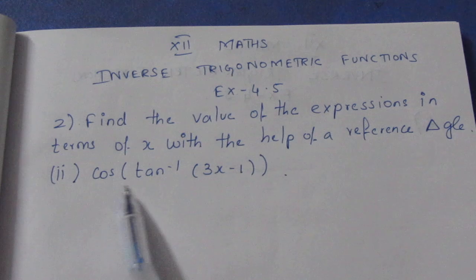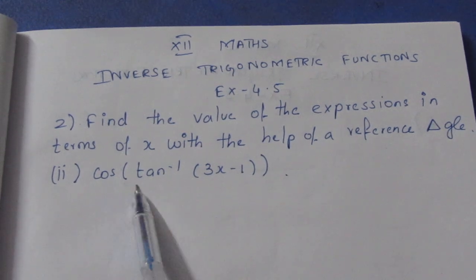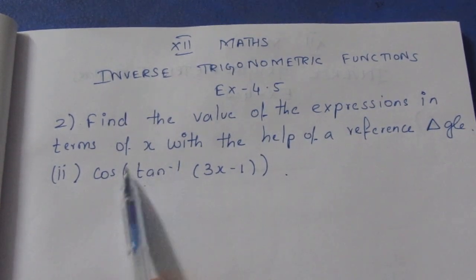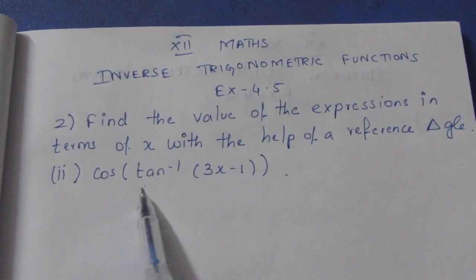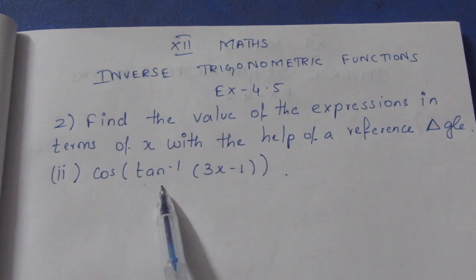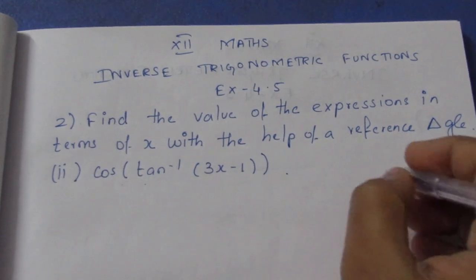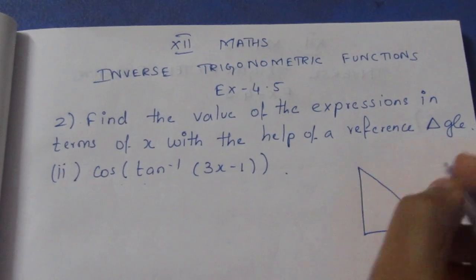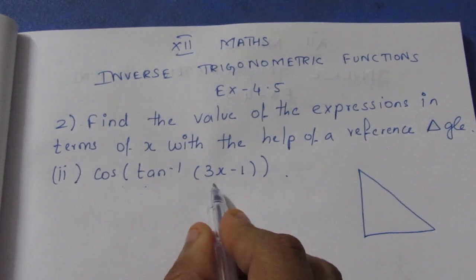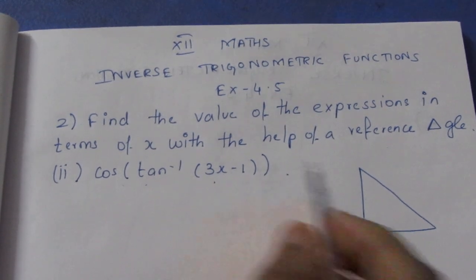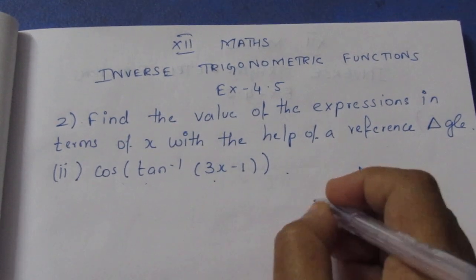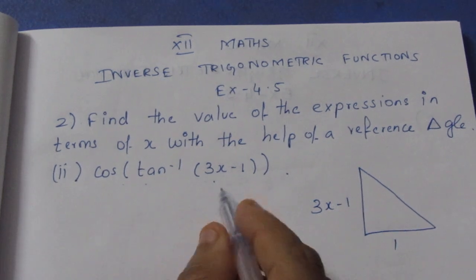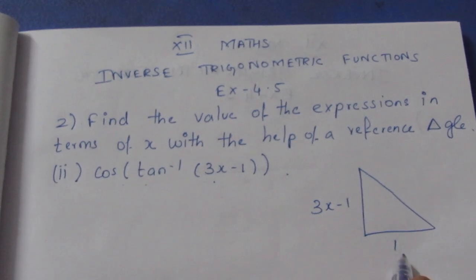For cos(tan⁻¹(3x-1)), we can cancel the inverse. We know that tan inverse gives us opposite by adjacent. So opposite is 3x-1 and adjacent is 1.